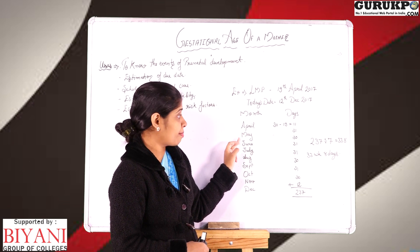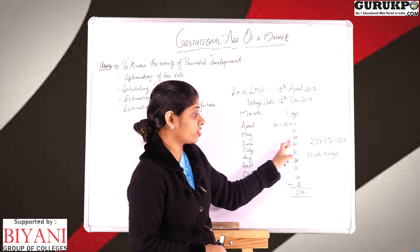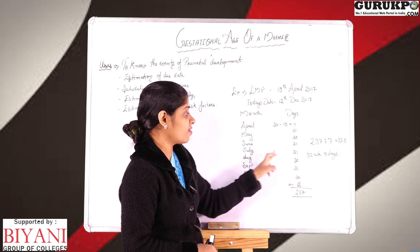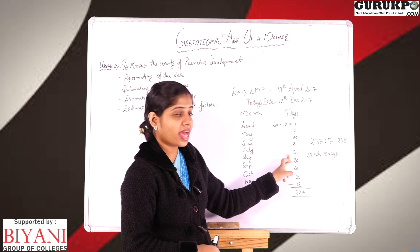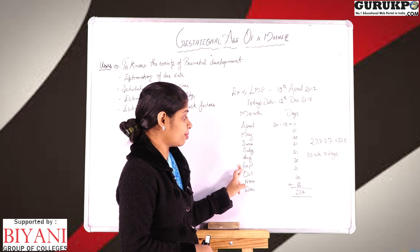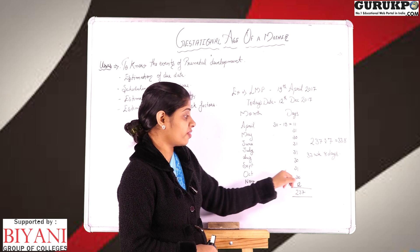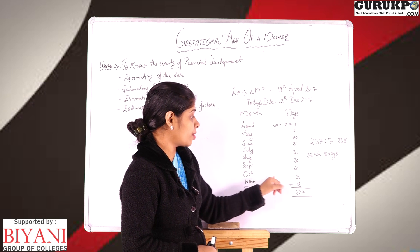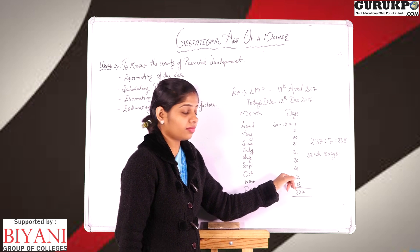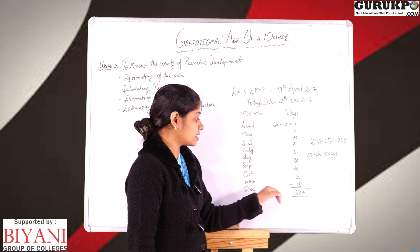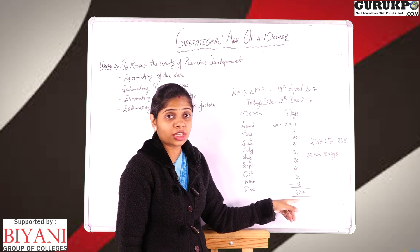Then: May has 31 days; June has 30 days; July has 31 days; August has 31 days; September has 30 days; October has 31 days; November has 30 days; and in December, today's date is the 12th.